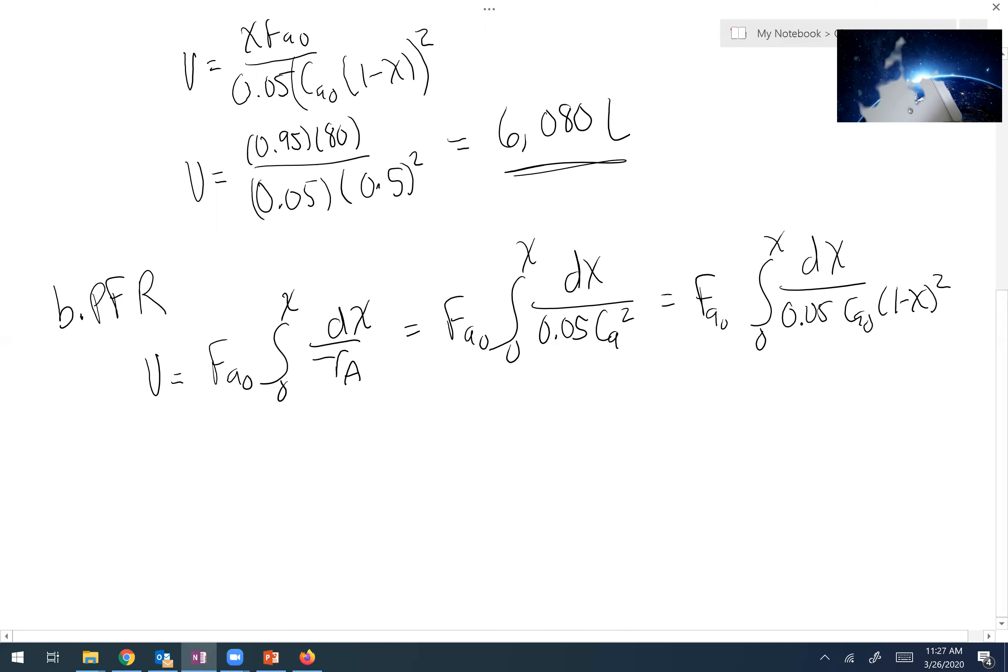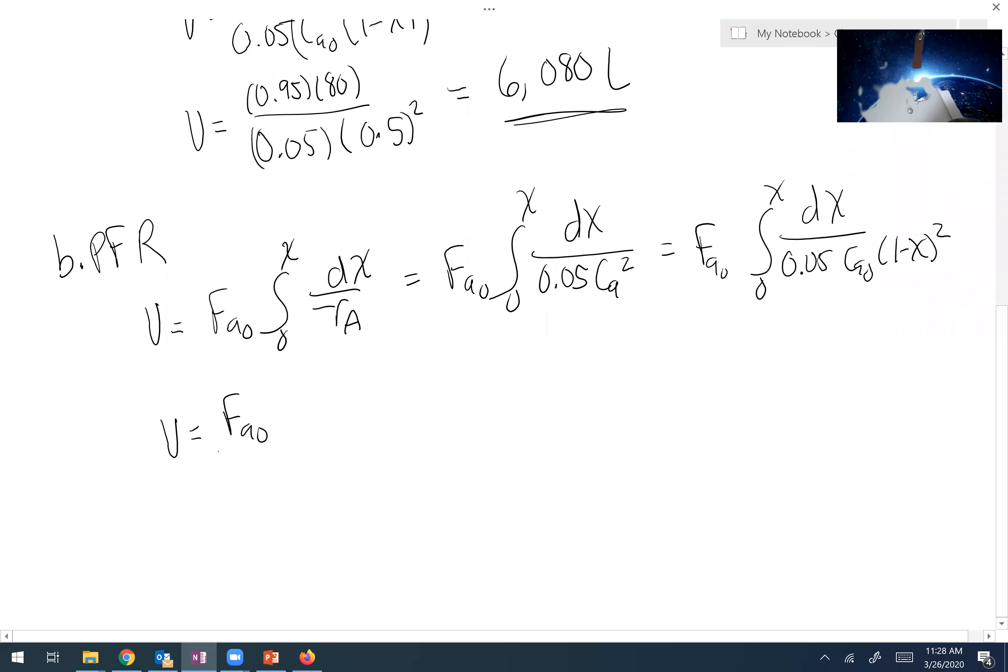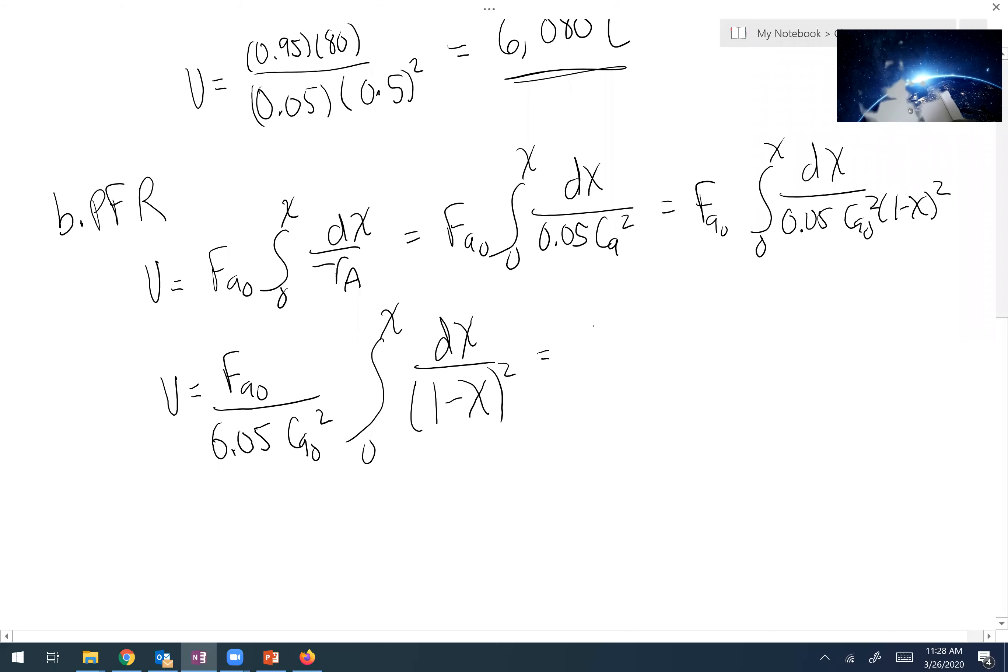So I can pull everything out of the integral except for the term associated with conversion. I get an expression here which is FA0 over 0.05 times CA0 squared - excuse me, I forgot to put that over there - times the integral from 0 to X of dX over (1 minus X) squared. Yeah, I'm going to use X. We all use X, right? That means I have FA0 over 0.05 times CA0 squared times the integral, which becomes negative 1 over (1 minus X) from 0 to 0.95.